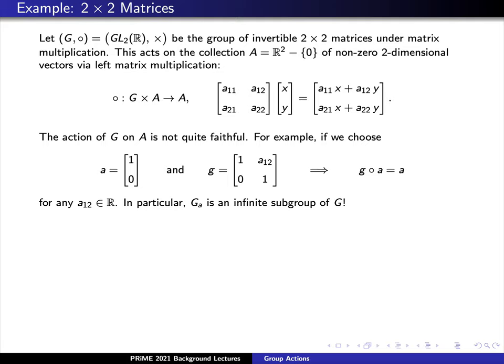However, the action of G here is not quite a faithful action. Remember that faithful means that every element g should map to a unique element in A. This is not quite the case. For example, if we choose our element a to be the vector (1, 0) and if we choose any invertible matrix of the form (1, A12, 0, 1), you can check that the determinant does not equal zero, then g times a equals a. This means that there are a lot of matrices which stabilize the vector (1, 0). In particular, the stabilizer G sub a is an infinite subgroup of our group G, GL_2 of R.